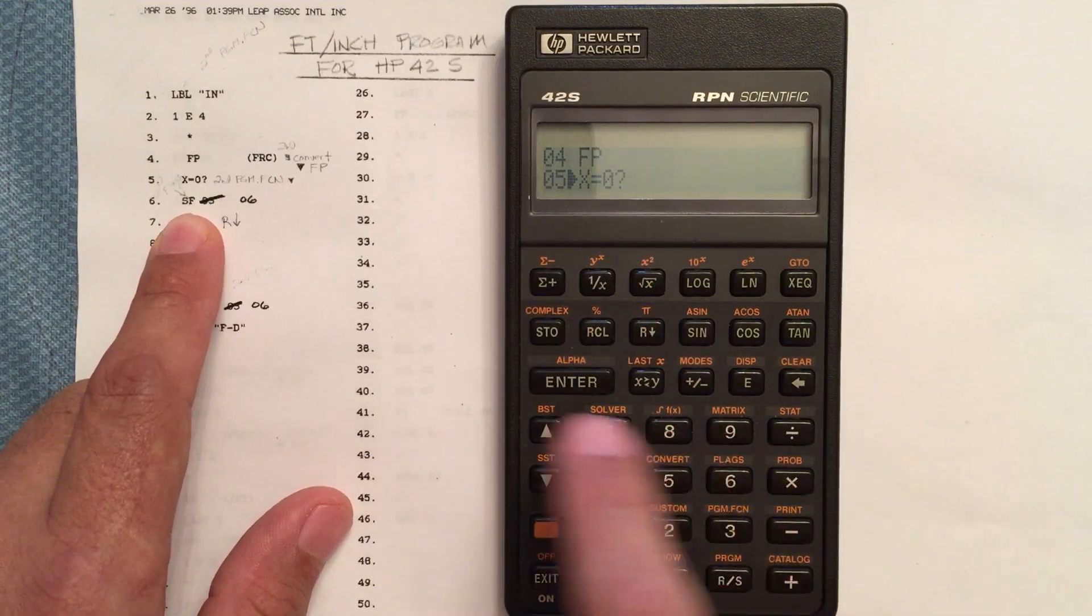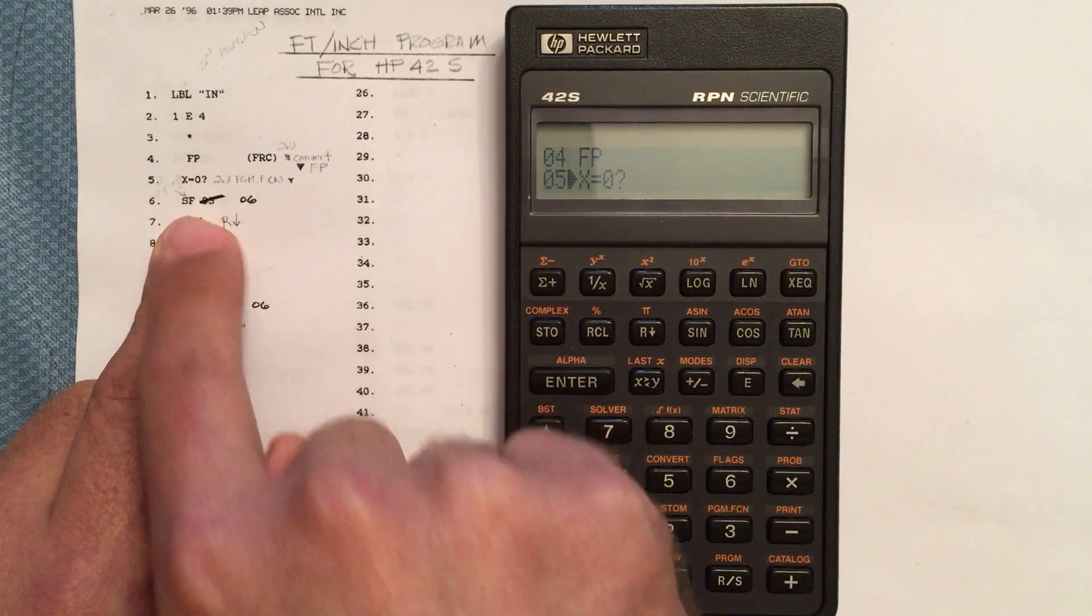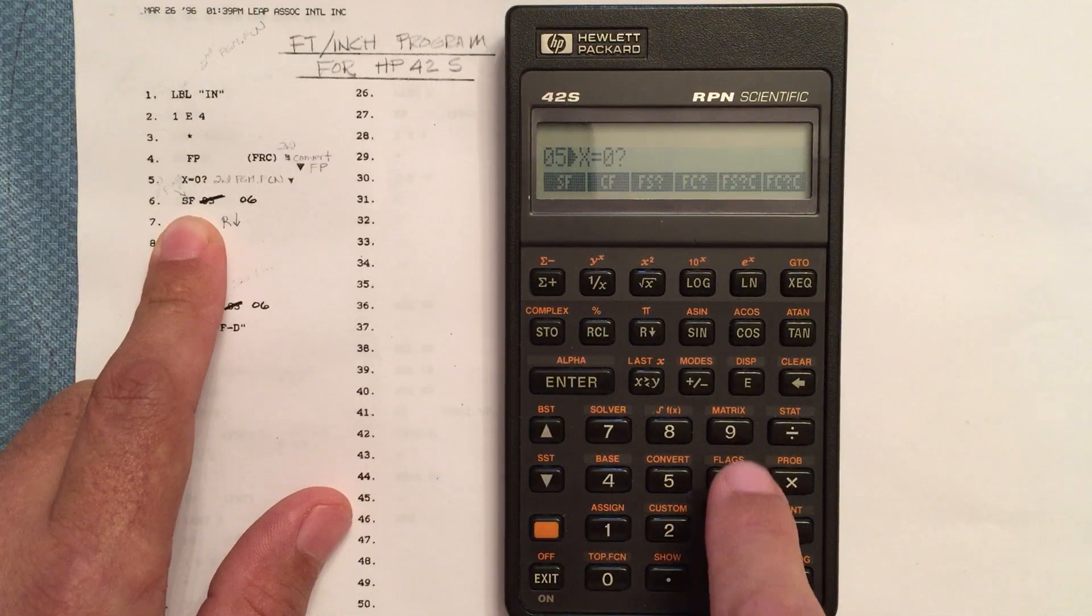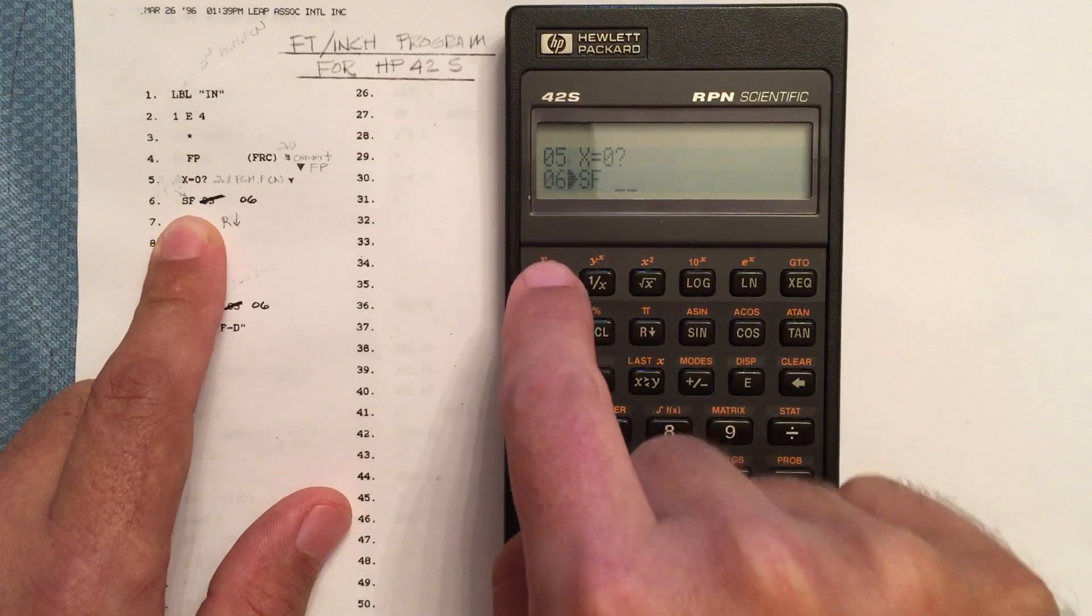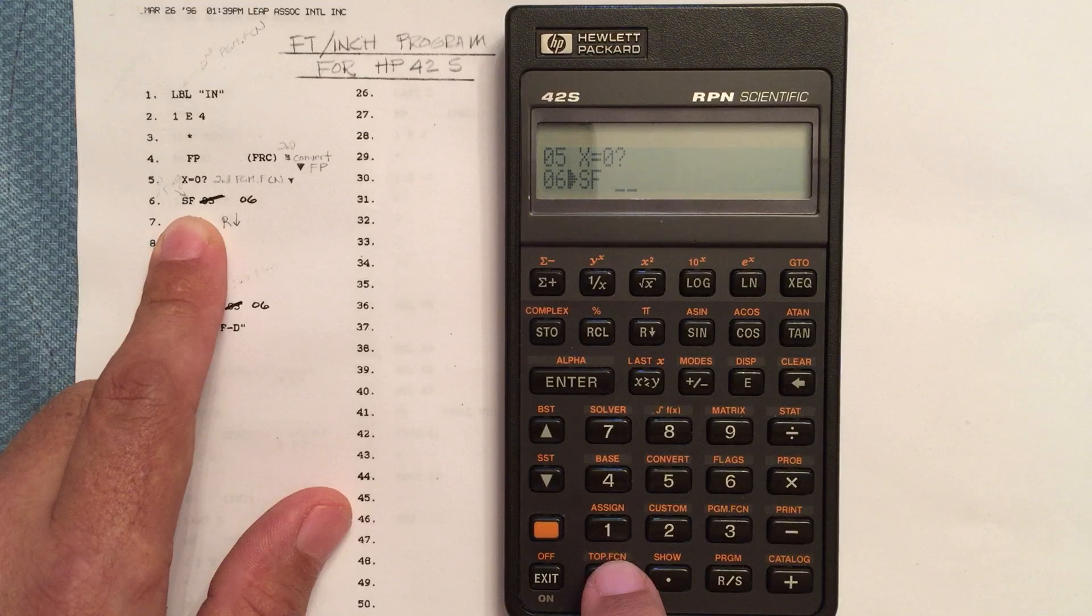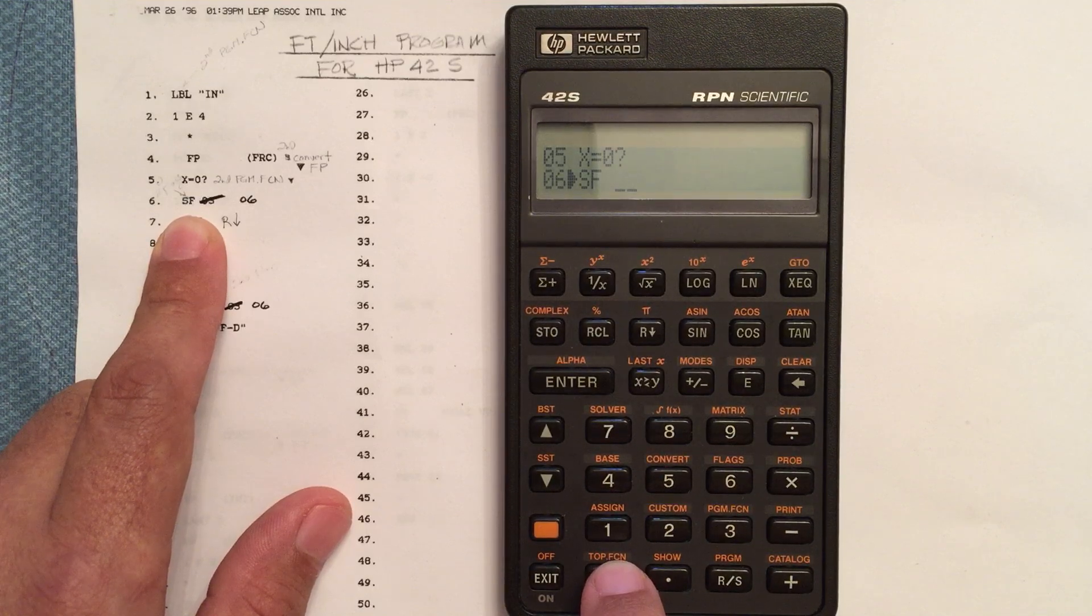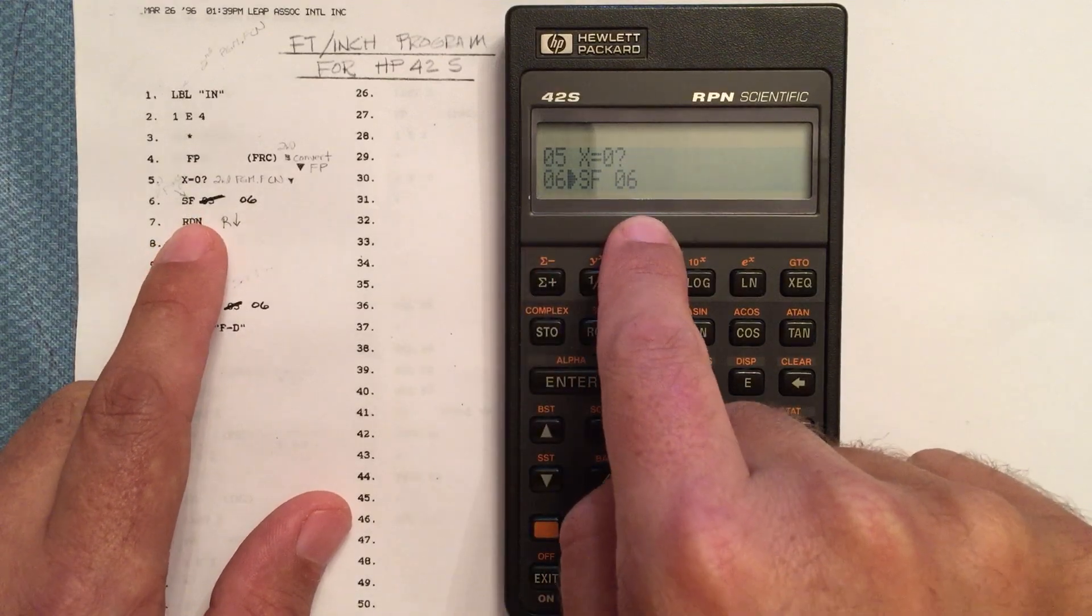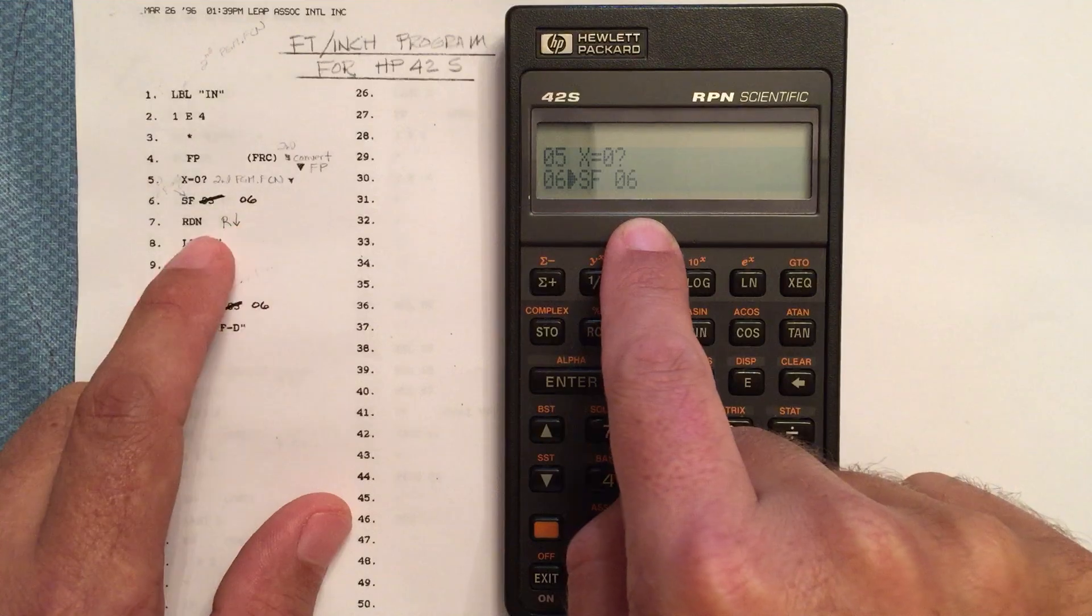So the next one is a flag. You have set flag, clear flag. Let's go to the flags menu. Shift flags, and there we have set flag. That says what number flag would we like to set? This is just a custom flag that we set that we're going to test later. So we set flag 6. It could have been flag 1, 2, 3, but 6 is fine here.